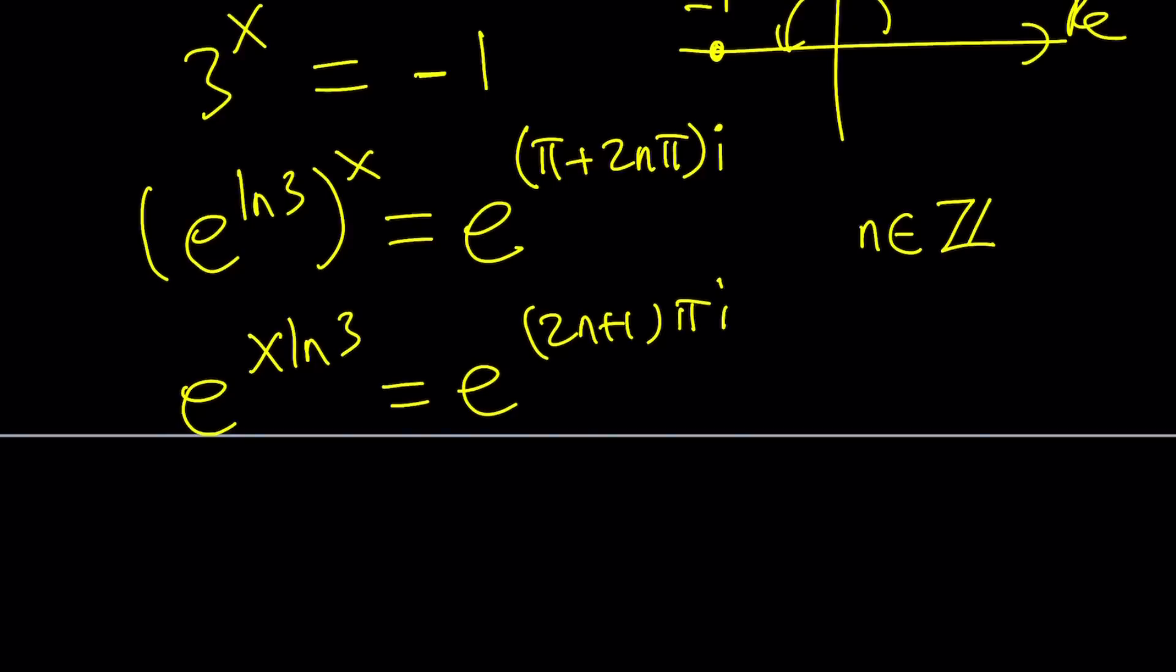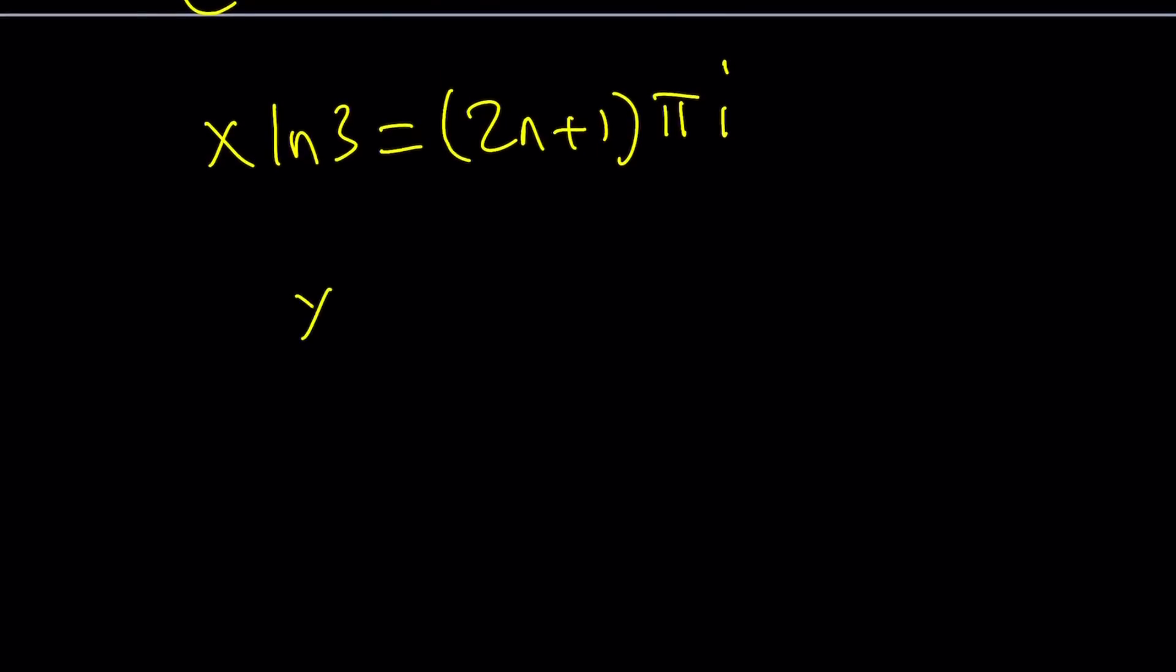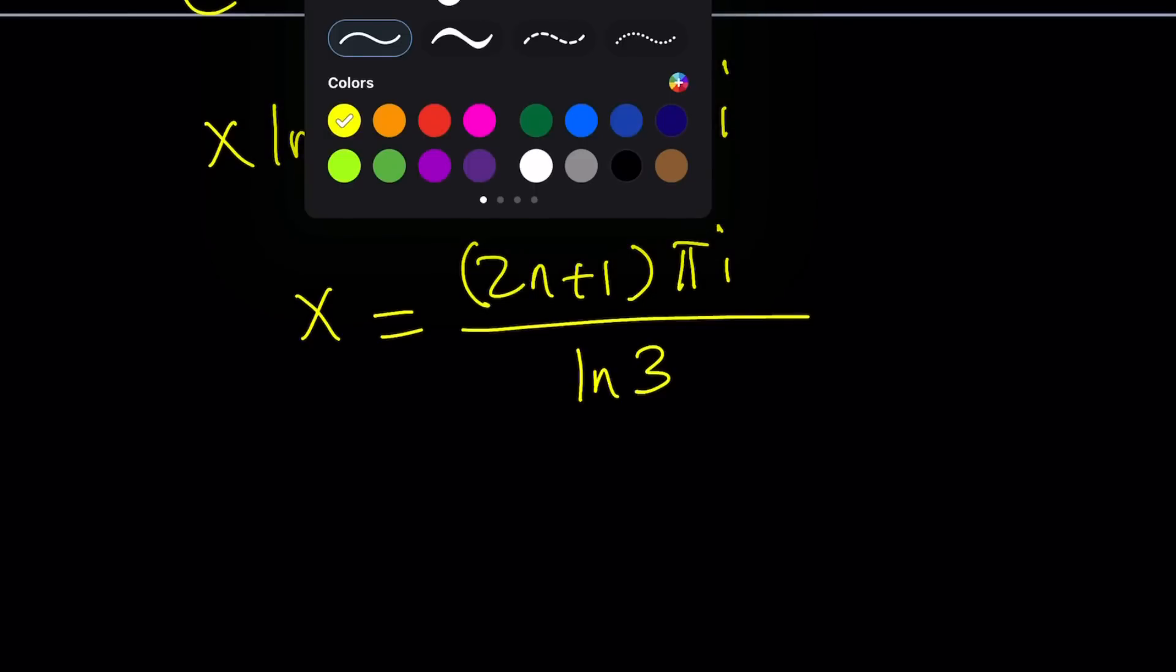And now we have the equality x ln 3 equals 2n plus 1 pi i. And now, since we're looking for x values, we can just divide both sides by ln 3, which is a positive quantity. So we have a purely imaginary number, whose real part is 0. And so these x values are actually going to be solutions. And we were looking for x values, so we are done.